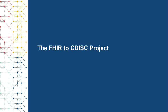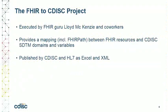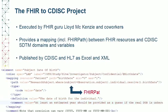An important breakthrough for enabling the use of electronic health records in clinical research has recently been made: the FHIR to CDISC project. People in this session, like Rhonda and Rebecca, may plead guilty here. The project was mostly executed by FHIR guru Lloyd McKenzie and his co-workers. It provides a mapping between FHIR resources and CDISC SDTM domains and variables, especially using FHIRPath to describe the relations. The results were also published as XML, making it possible to use the FHIRPath relations in software, so automating a lot of things, and we have already started doing so in our own software projects.